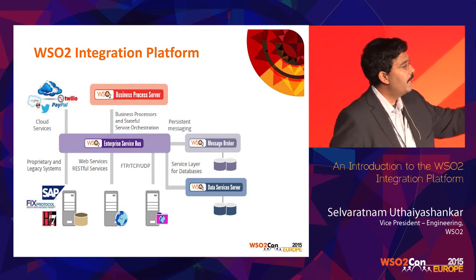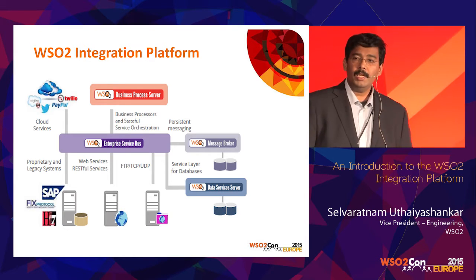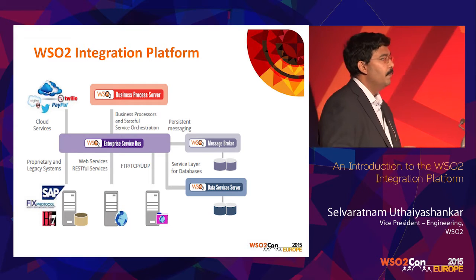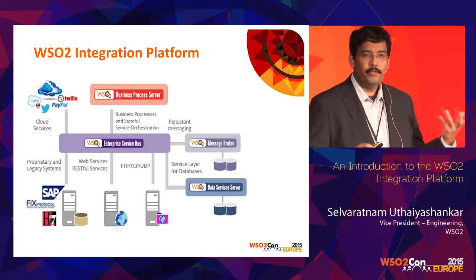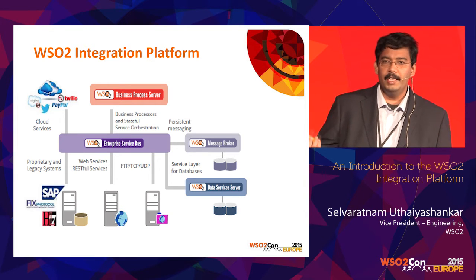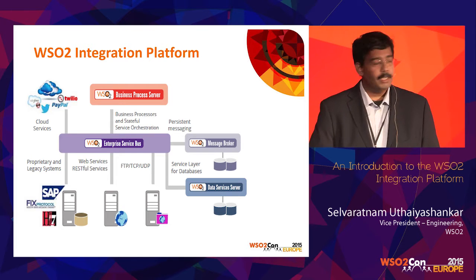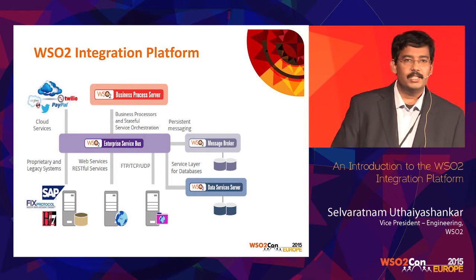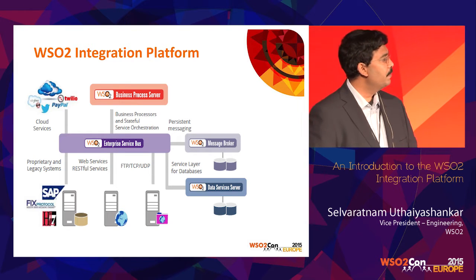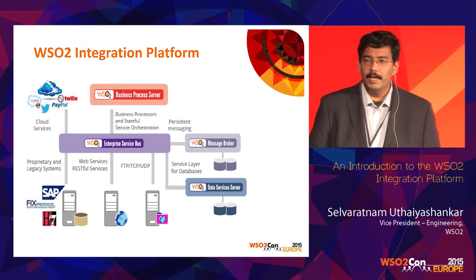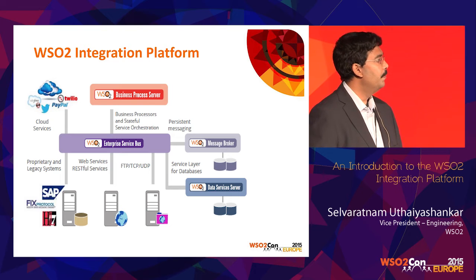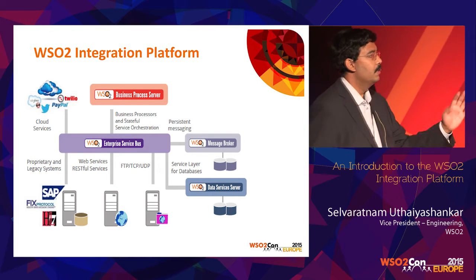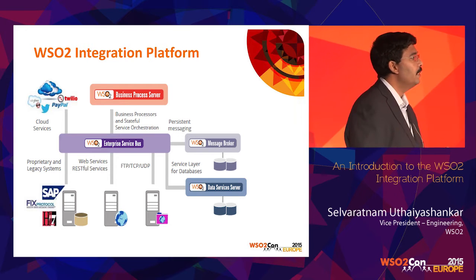We'll start with the product in the middle, which is the Enterprise Service Bus. The functionality of the ESB is to decouple the producer and the consumer. This allows you to independently modify the producer without affecting the consumer, and vice versa. At the same time, you know exactly who is using whom and have all dependencies and impact analysis available. The ESB can connect to any services or legacy systems and provide an API or service for upper layers, as well as connect to various cloud services.